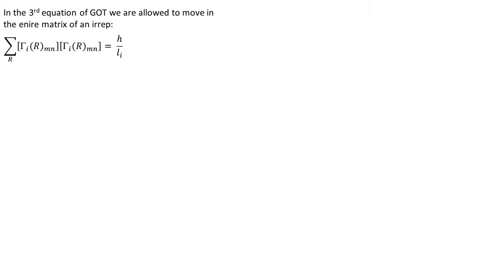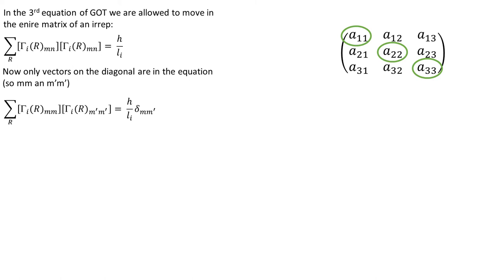Let's see how this equation is derived. As we already said in the third equation of GOT we are allowed to move in an entire matrix of an EREP and that's why we have different symbols for rows and columns. Let's think what M and N really are. Let's say we want to construct an algorithm. Well M and N are numbers from series of integers 1 to Li. Here we have some example matrix of a three-dimensional representation. So the series will be 1, 2, 3. How we would modify the equation so that it only considers vectors on a diagonal? Well we would use the same symbol to denote rows and columns. But notice one vector has MM and the other M prime M prime. That means that we can dot two different vectors that sit on the diagonal.